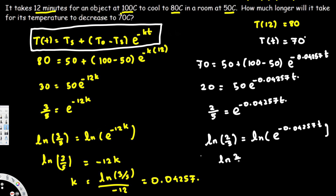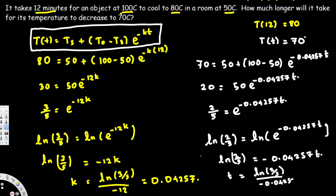Rearranging to solve for t: t = ln(2/5) / (-0.04257). Since 2/5 is less than 1, its natural log is negative, and negative divided by negative gives a positive result. Calculating this gives t ≈ 9.52 minutes. That's how long it will take to cool down to 70 degrees Celsius. I hope this helps, thanks for watching!